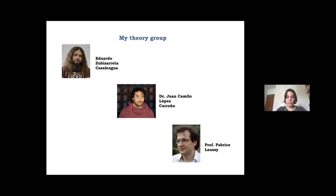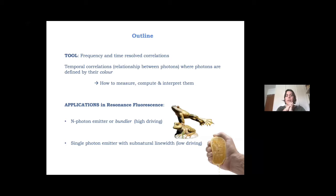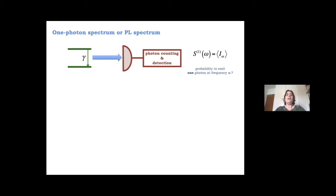Let me show you the outline of the talk. I will discuss N photon emitters and single photon emission in the case of resonance fluorescence — a two-level system driven by a laser — from the perspective of frequency and time resolved correlations. Normally correlations are computed in time, and I will introduce a new variable, frequency, which brings a lot of interesting features.